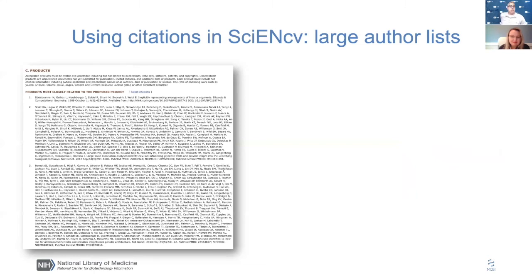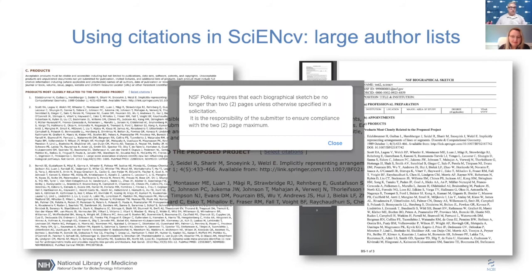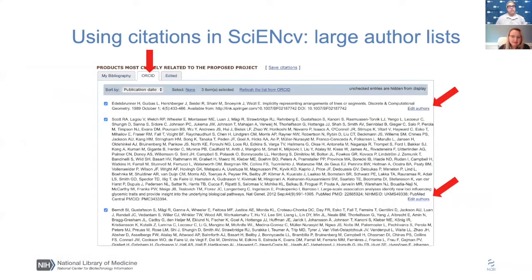Sometimes pulling information into ScienceCV can cause an issue. For instance, if you publish in the physical sciences, publications often have large author lists because of big collaborations. If you're trying to fill out a biosketch for the National Science Foundation, you're limited to two pages, and one or two citations with long author lists can easily put you over that limit. So if you get that error message and these large author lists come over from ORCID, we've collaborated with scientists and come up with a solution.